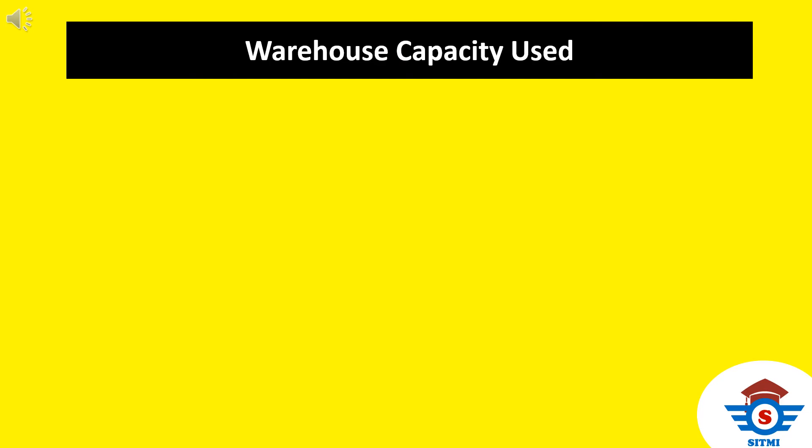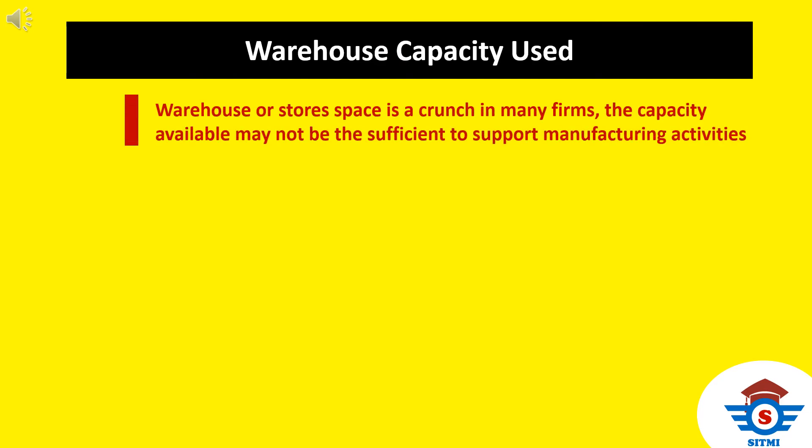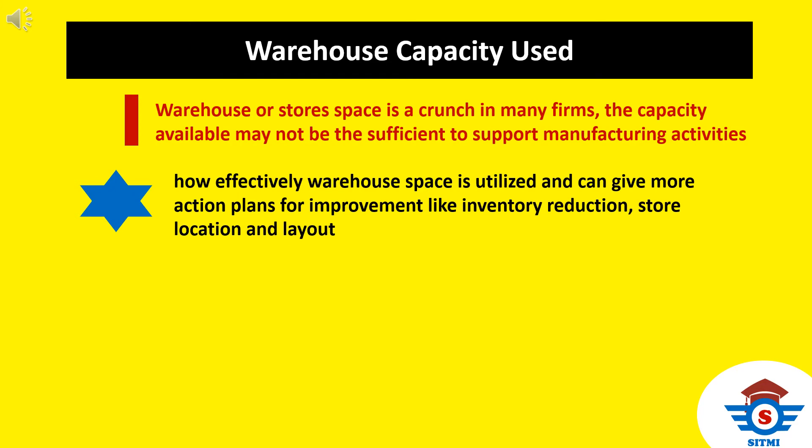Our next metric is Warehouse Capacity Used. Warehouse or store space is a crunch in many organizations, and the capacity available may not be sufficient to support manufacturing activities. When a business wants to grow, cost reduction focus should be more aggressive. Warehouse space utilized turns into costs for rent, labor, electricity, material handling equipment, and also scrap and obsolescence. This indicator gives an idea of how effectively warehouse space is utilized and can provide action plans for reducing inventory or changing the store layout.